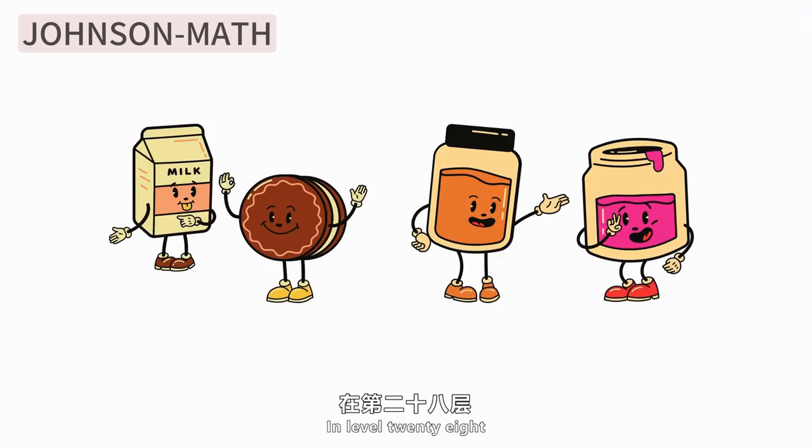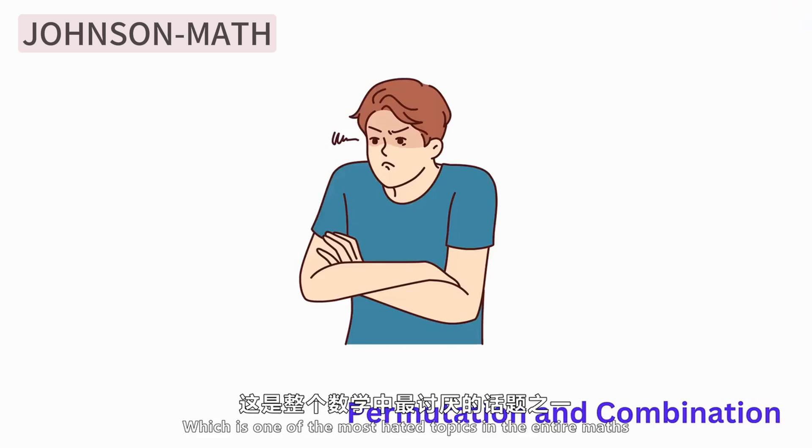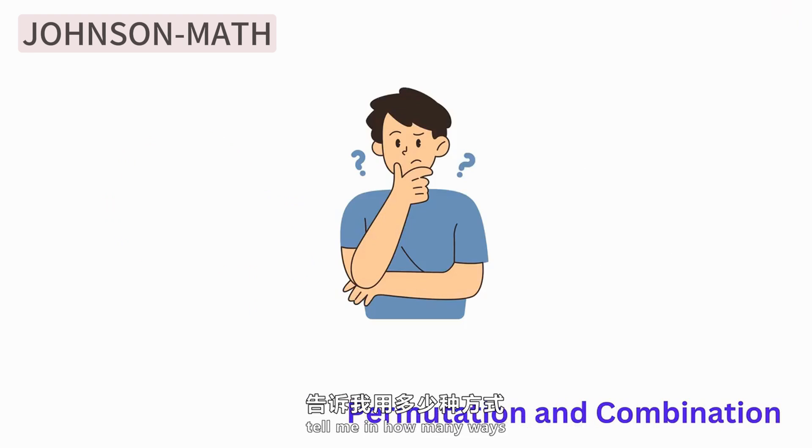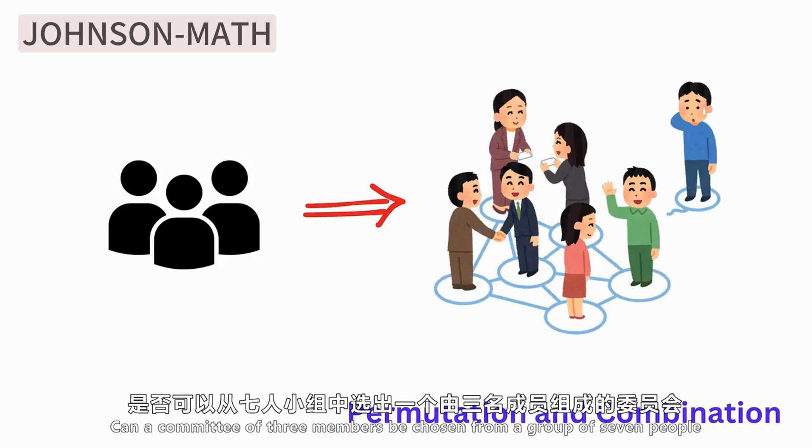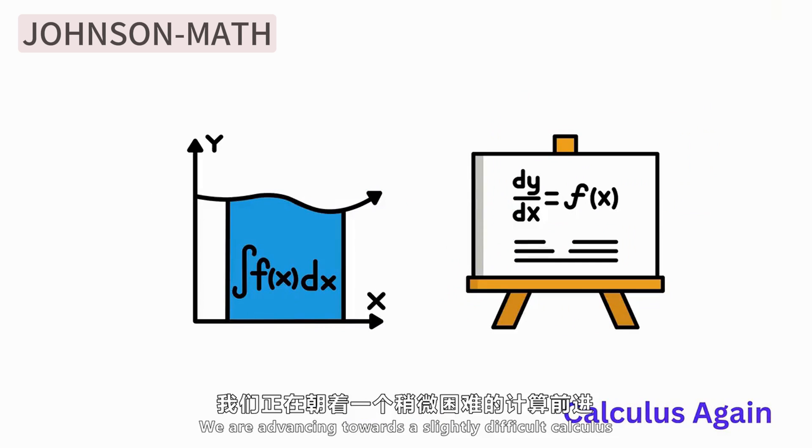In Level 28, we'll introduce permutations and combinations. This is definitely one of the most annoying things in math. Choosing a committee of three people out of seven, how many ways can you choose? In Level 29, we'll start to touch on the more difficult calculus. We'll start with limits. When x approaches 2, find the limit of this expression.